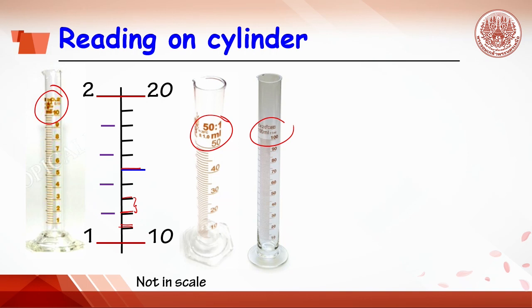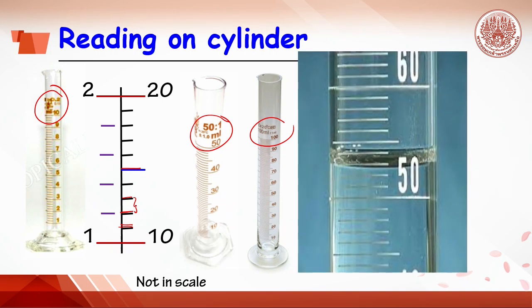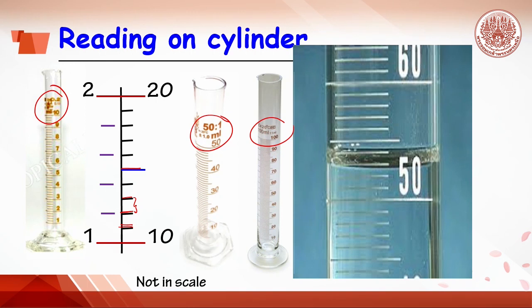For example, when reading water volume in a 100 ml cylinder, make sure to read at the meniscus. The water level is located between 52 and 53, so one uncertain digit between these two numbers must be estimated. This reading should be reported as 52.7 ml, where 0.7 is the uncertain digit.